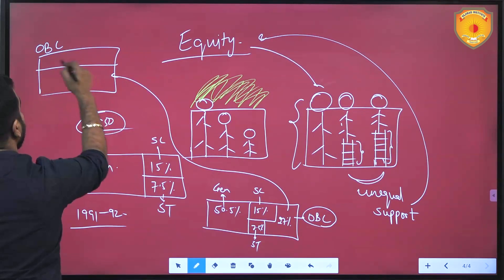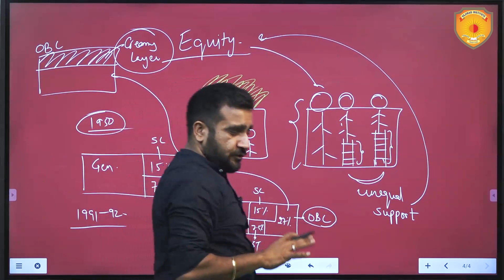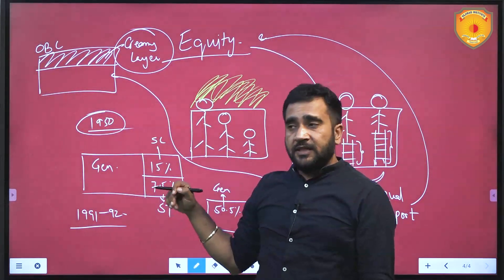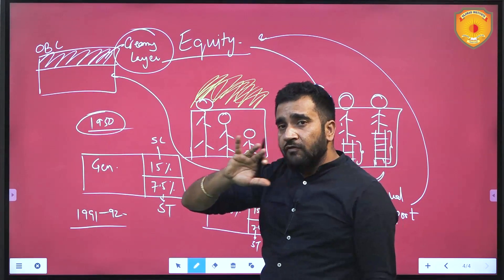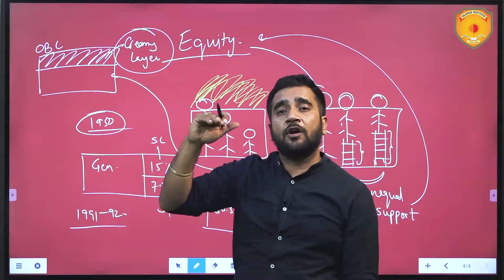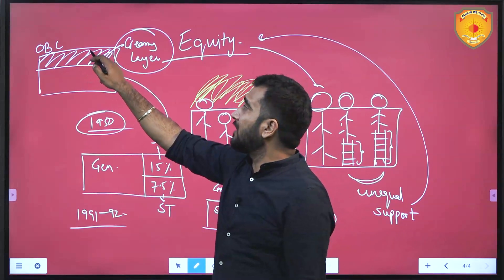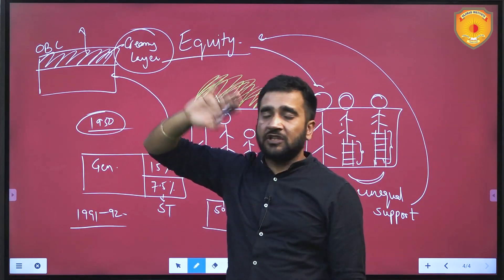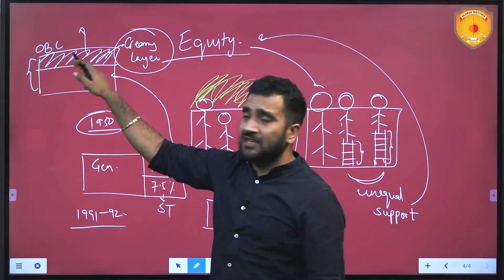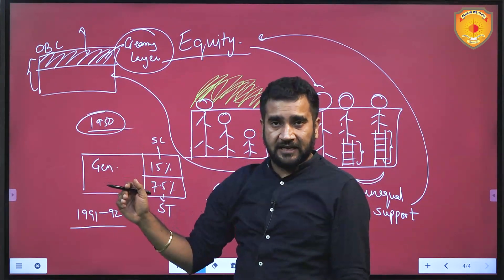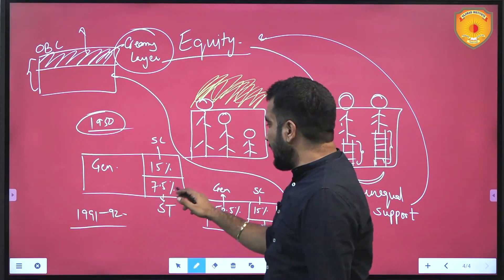Within the OBC category, a phenomenon called the creamy layer was applied. It was decided that if one generation of an OBC family had taken advantage of reservation and met the standards of the creamy layer, their future generations would not get reservation benefits — they would come out of the net of reservation. So we can say that sub-categorization already existed in OBC as creamy layer versus non-creamy layer. The Supreme Court has now said that this kind of sub-categorization will also apply to SC and ST.